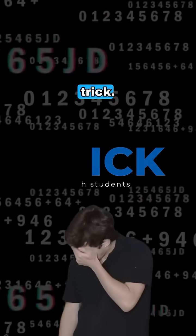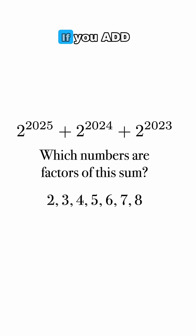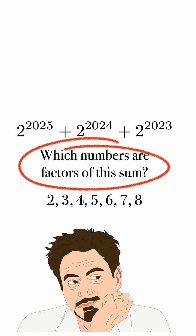Most math students don't know this clever trick. Can you solve this problem? If you add 2 to the 2025th power plus 2 to the 2024th power plus 2 to the 2023rd power, which numbers are factors of that sum?